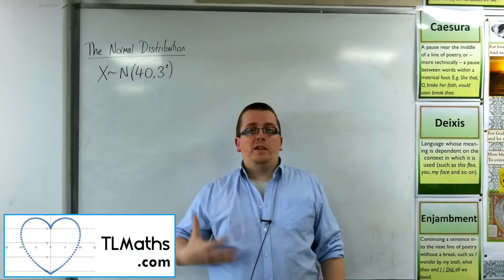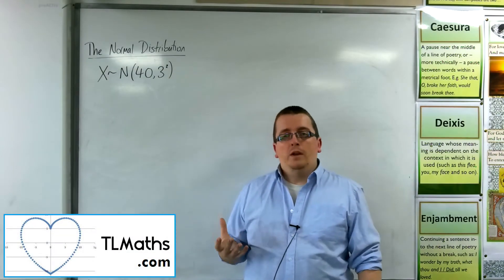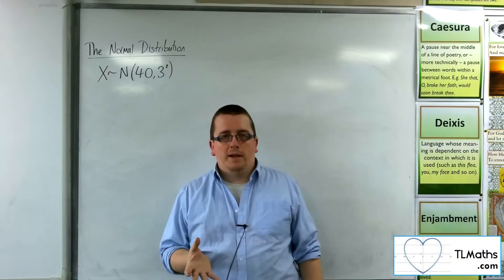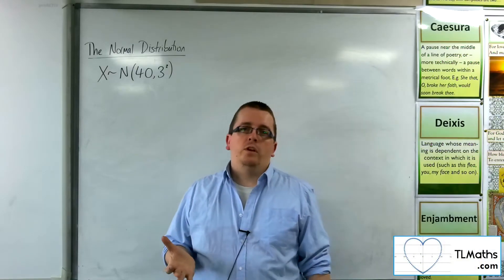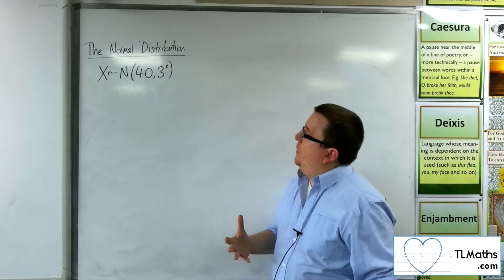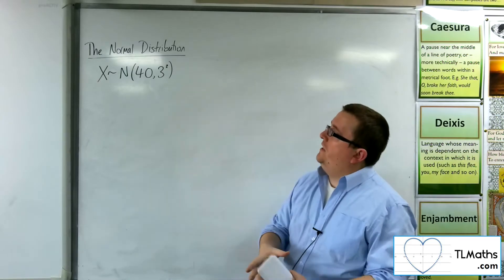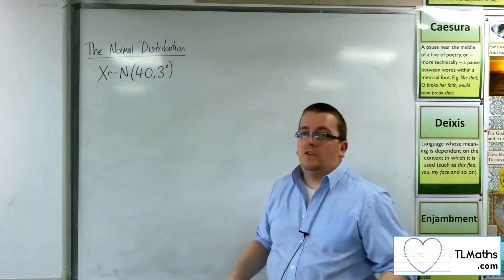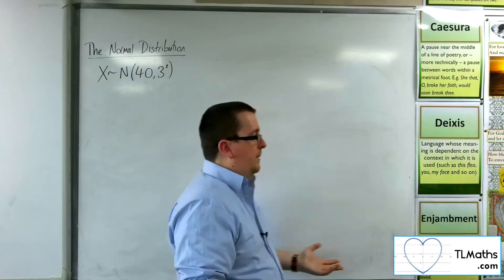Okay, so with the skills that we currently have, what we're able to do is we could approximate a normal distribution with a histogram. So, let's say we were looking at X being normally distributed with a mean of 40 and a standard deviation of 3, for example.